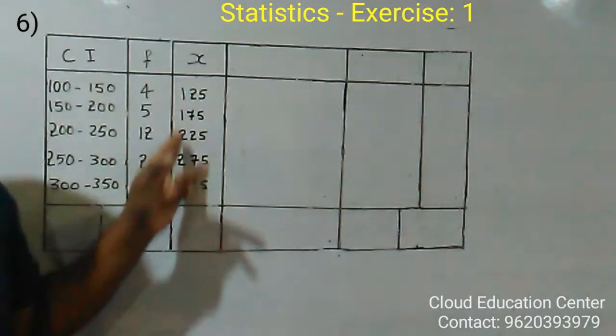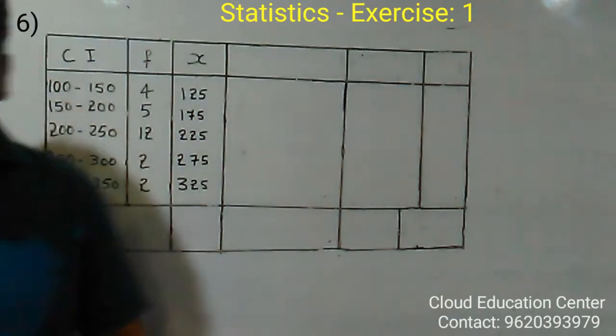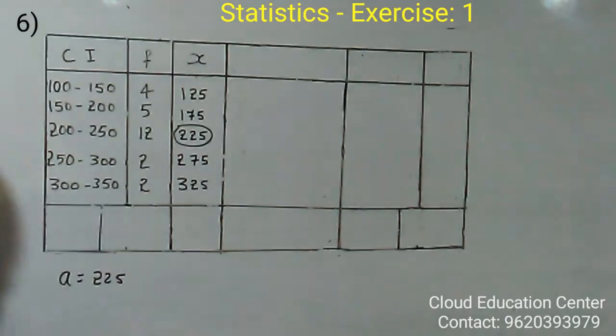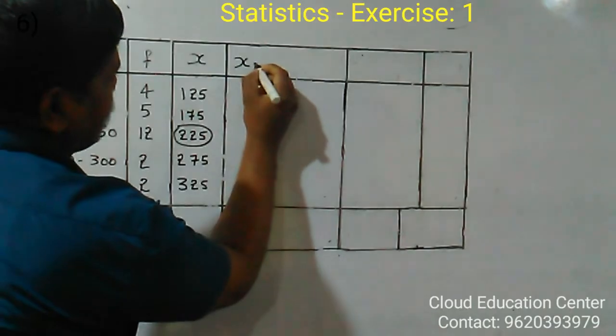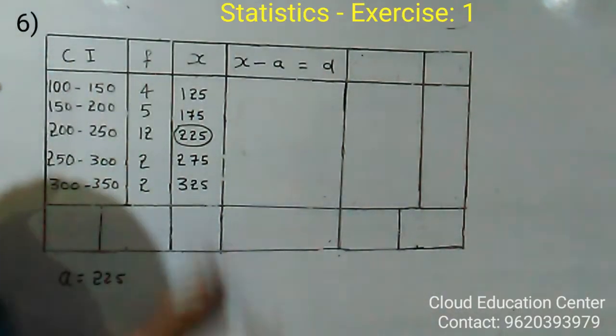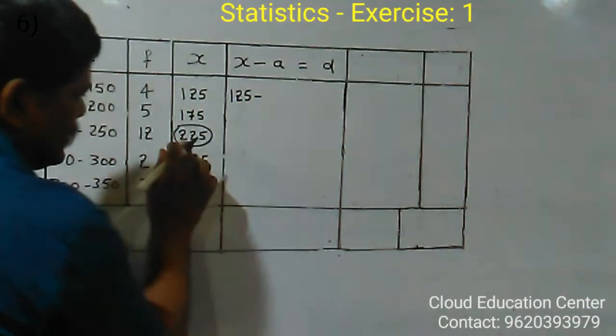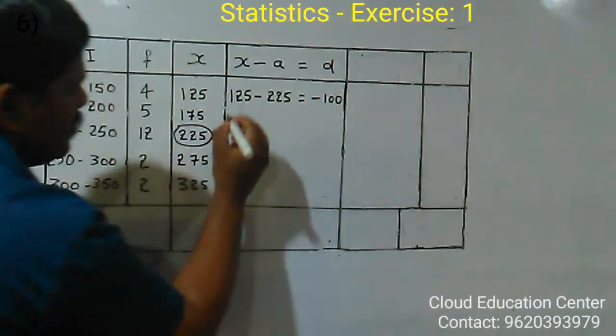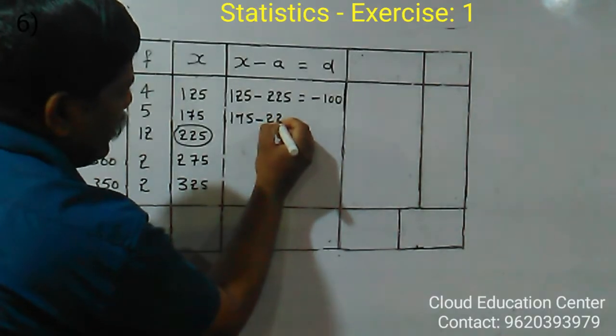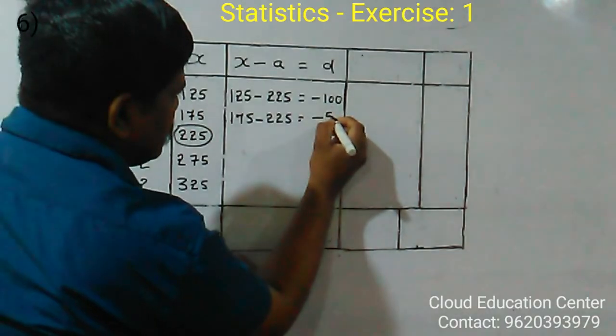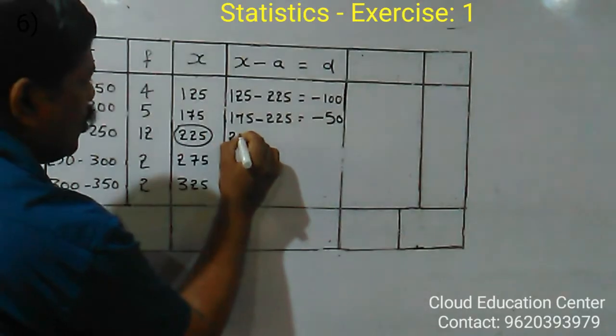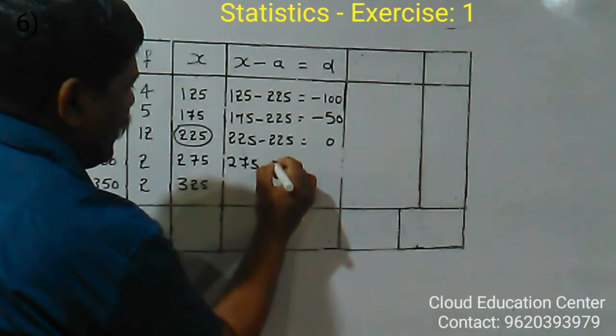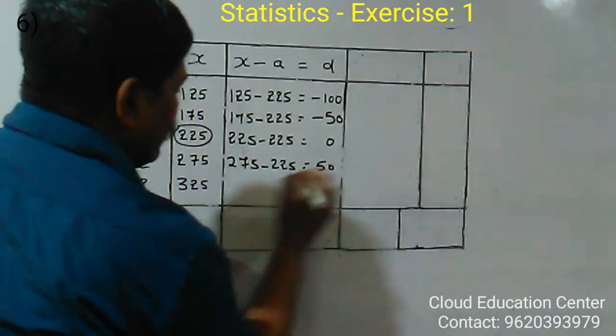Now you will select any one as the assumed mean. Student, tell me which one would you like to take? 225. So then we will take 225 as A. Here A is equal to 225. Now we have to find X minus A is equal to D. Here X is 125 minus A is 225. So 125 minus 225 is minus 100. 175 minus 225 is minus 50. And 225 minus 225 is equal to 0.